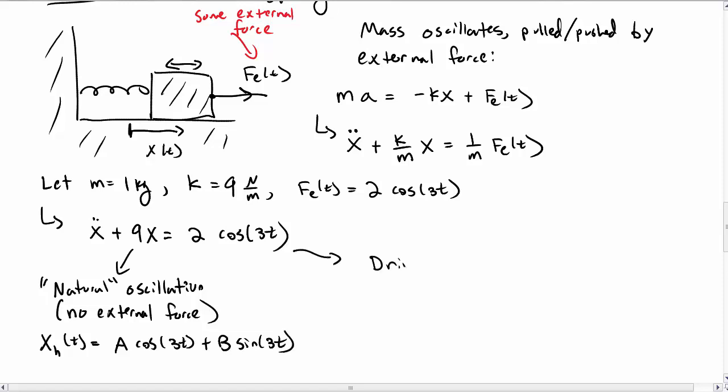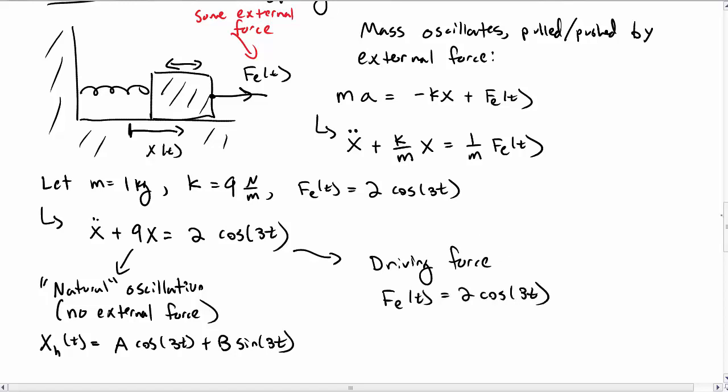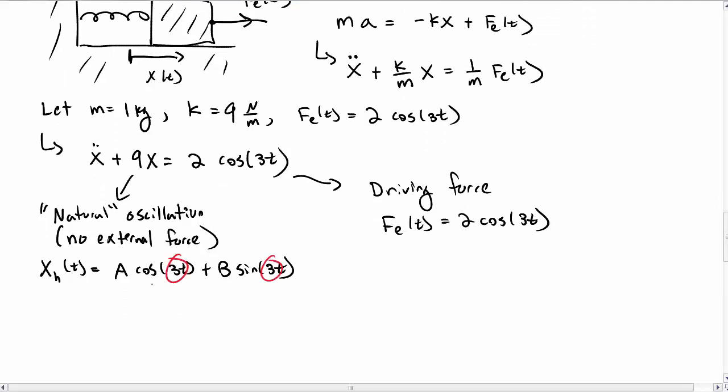There's this driving force as well, and the driving force again has this form 2 cosine of 3t. Now I want to point out what's inside of the sines and cosines. For the natural oscillation, there's an associated natural frequency, which in this case is 3 hertz.